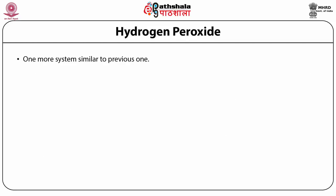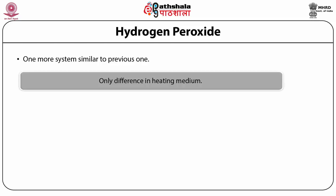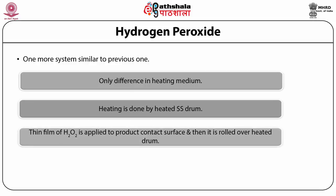A second system is similar to the one just discussed. The main difference is in how heat is applied to the package surface. This system provides the heat necessary for sterilization by means of a heated stainless steel drum. A thin film of peroxide is applied to the product contact surface, which is then rolled over the heated drum.